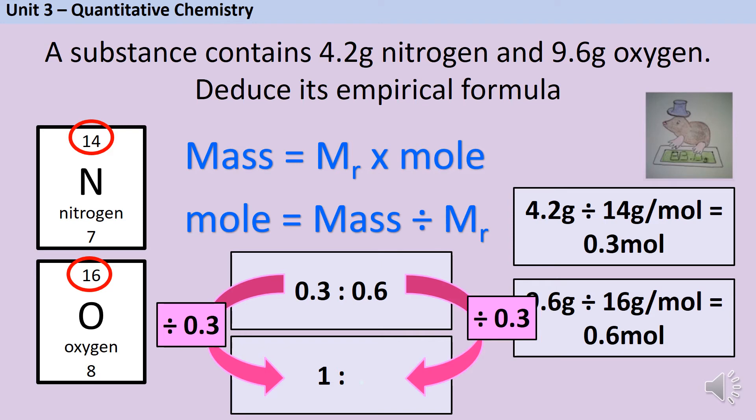Watch out here that you don't end up dividing both sides by themselves and coming up with a one to one ratio. We're always dividing by the smaller of the two numbers. 0.6 divided by 0.3 is two so we've got a one to two ratio. Now remember you need to give your answer in the format of a chemical formula so we can't just leave one to two. One nitrogen to two oxygen is NO2 and that is my empirical formula.